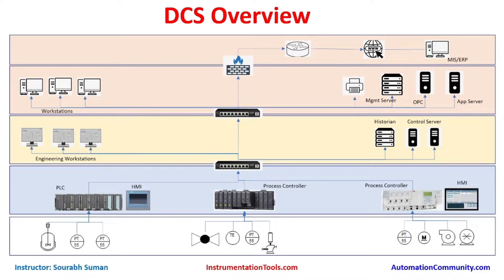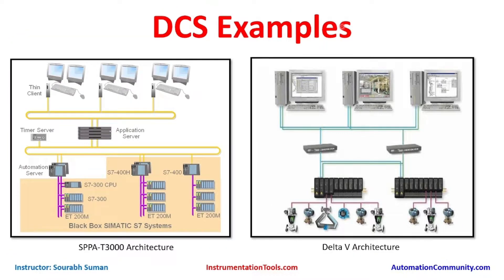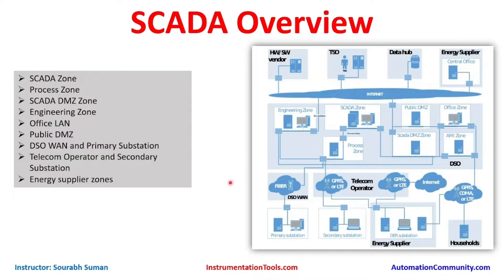We started with the DCS architecture — what components are there in DCS, how it looks, and how many types of architectures exist. We saw how to place DCS in the Purdue model, then looked at DCS examples from Siemens, Yokogawa, and Delta V. We also covered SCADA-based architectures like the zone-based model.